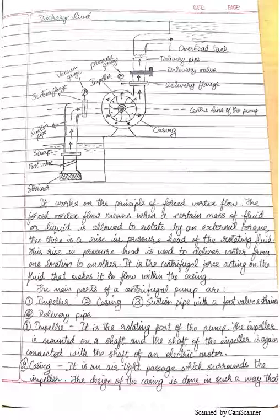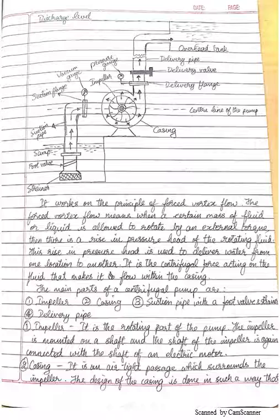The centrifugal force acting on the fluid causes suction, and water from the sump moves upward through the suction pipe onto the suction flange, into the casing, then upward through the delivery flange, through the delivery valve, onto the delivery pipe, and finally to the overhead tank. The main parts are the impeller (the rotating section), the casing which covers the impeller and provides protection, and the suction pipe with a foot valve and strainer, along with the delivery pipe with delivery flange and valve.